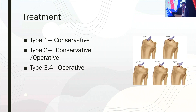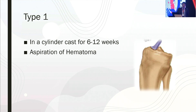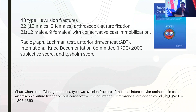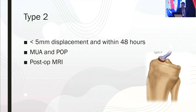The treatment of type 2 is generally controversial, while type 3 and 4 are treated operatively. Type 2 fractures presenting within the first 48 hours with less than 5 mm displacement can be treated with a manipulation and plaster of Paris. Gradually, more surgeons are operating on type 2 fractures than previously. However, if treated conservatively, a post-treatment MRI should be obtained to ensure the fragment has been properly reduced.